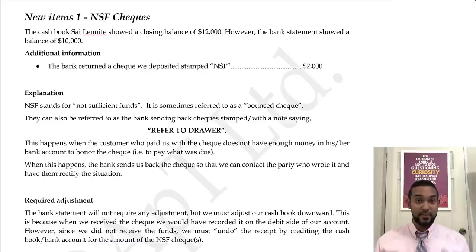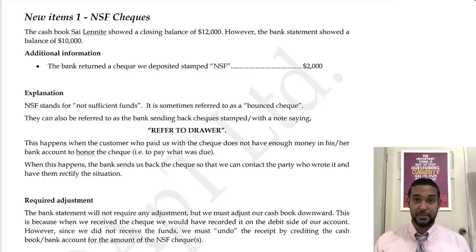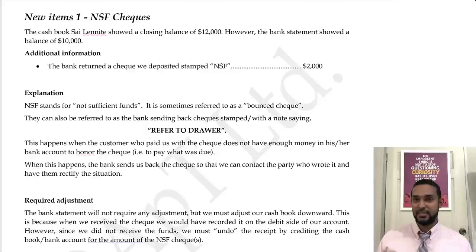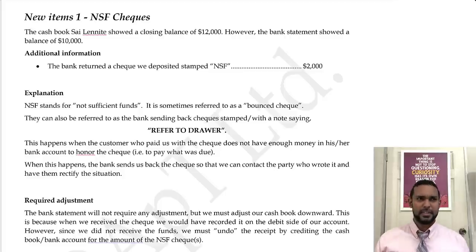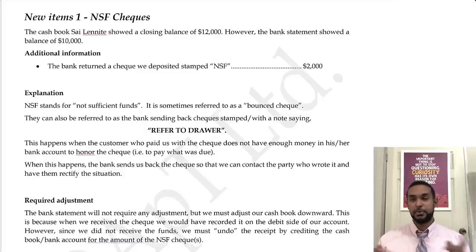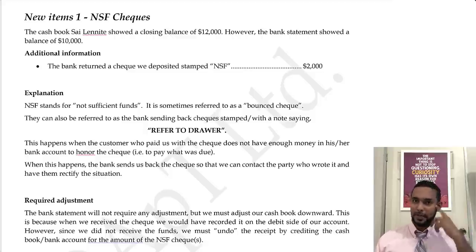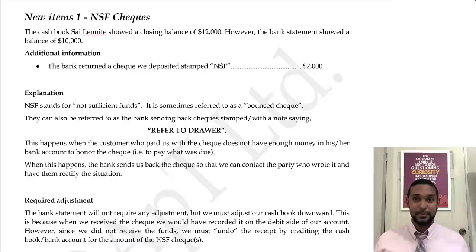When someone pays you with a check, you don't automatically get money — you have to carry that check to the bank and deposit it, either at the ATM or at the teller counter. Even then, money doesn't automatically come to your account. Traditionally there's a period of at least three to five working days until you get the money, because there's a whole clearing procedure for interbank transfers.